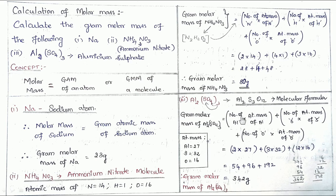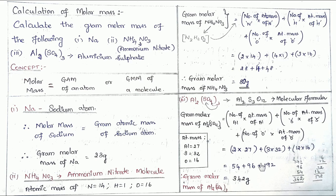Now we calculate: (number of Al × atomic mass of Al) + (number of S × atomic mass of S) + (number of O × atomic mass of O). Number of Al is 2, atomic mass of Al is 27; number of S is 3, atomic mass of S is 32; number of O is 12, atomic mass of O is 16. So: 2×27 + 3×32 + 12×16 = 54 + 96 + 192 = 342 grams.